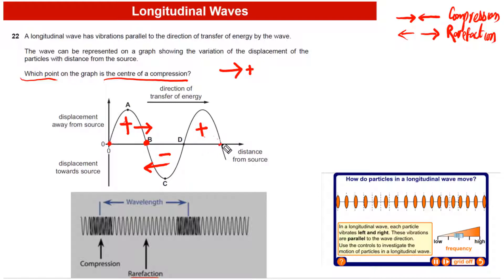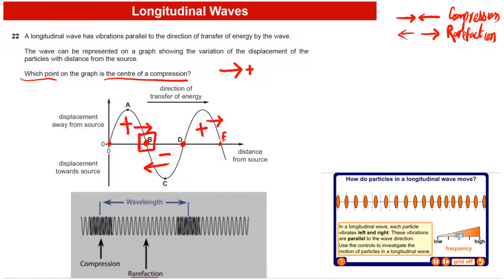After point D, between D and E, particles are moving to the right again. So the center of compression is at point B, and the center of rarefaction is at point D. Therefore, the answer to this question is B.